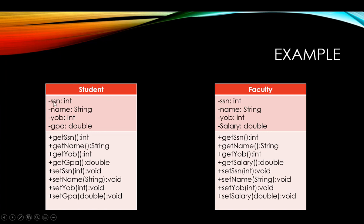For each student I will be recording the social security number, the name, the year of birth, and the GPA. And for each one of these instance variables I created a getter and a setter. So I created a class to keep track of my students with these four fields or four pieces of information.